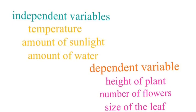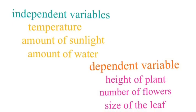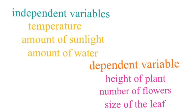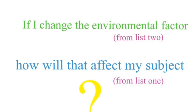But look at these dependent variables. The height of the plant, the size of the leaf. These are things that you measure. Okay, these are things about the object itself that you are measuring. Now what caused that to change? The independent variable.